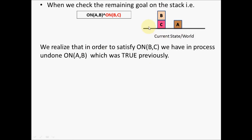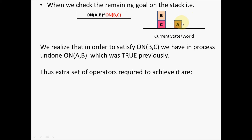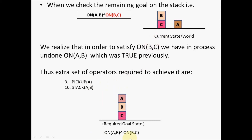Now on(A,B) is no longer true in the current world. What more actions can be taken so that on(A,B) is again true? That means A should be resting on B. So the first action is the robotic arm should pick up A — that will be the ninth action, since eight actions have already been carried out. Once the arm is holding A, A has to be placed on top of B, so the tenth action will be stack(A,B). When these two more actions are executed, the current state will change to the required goal state.